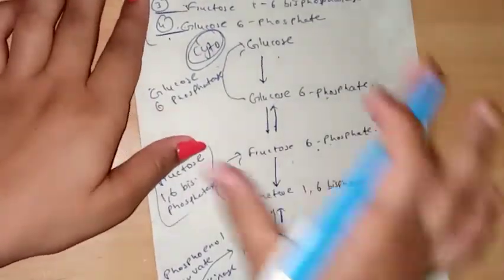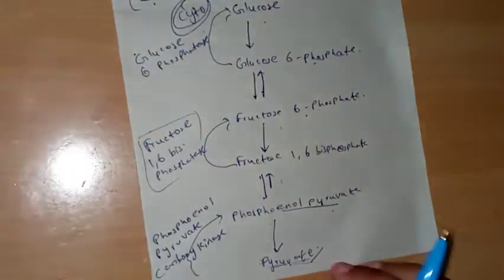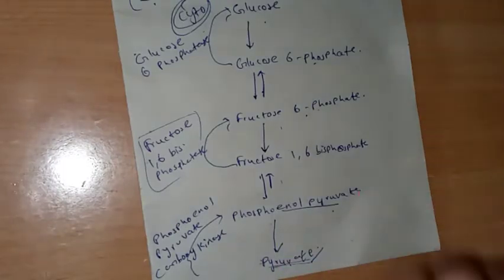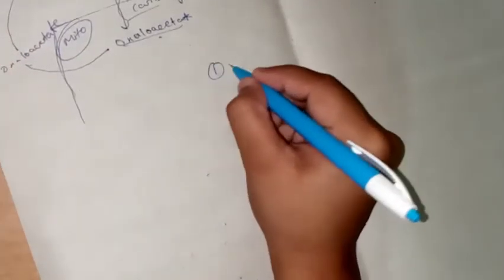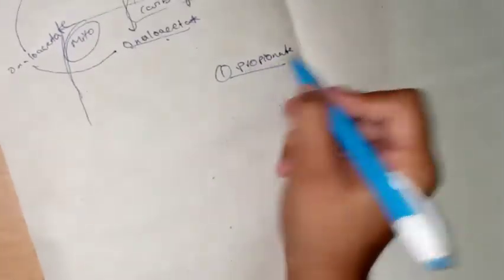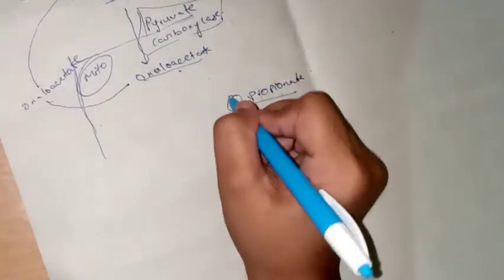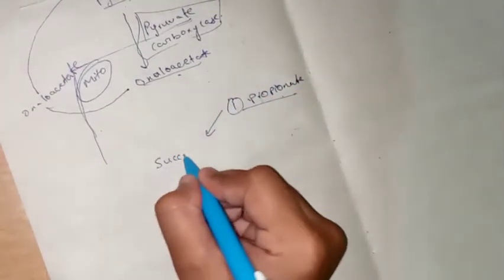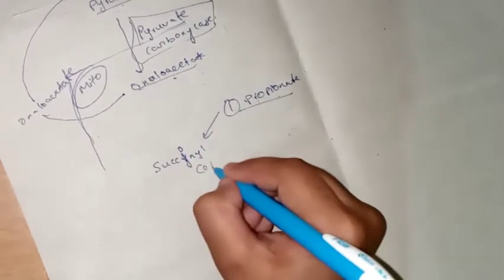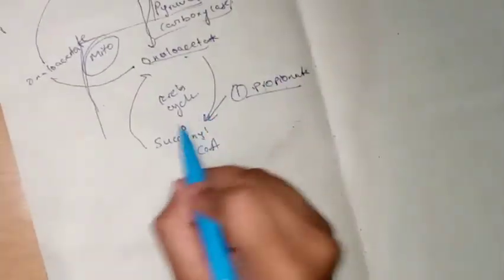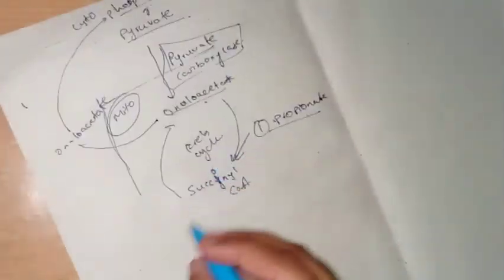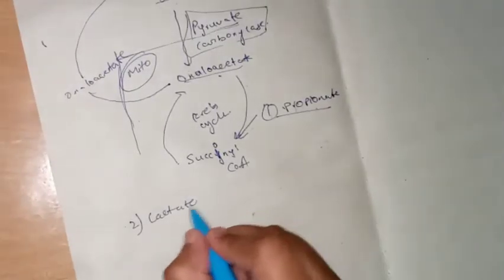Glucose can also be formed from three other substances: propionate, lactate, and glycerol. Propionate is converted into succinyl-CoA, and this happens in the Krebs cycle. Lactate is converted directly into pyruvate.